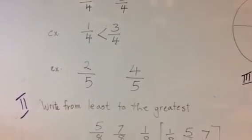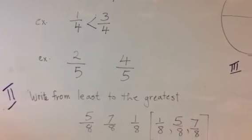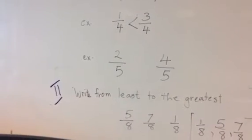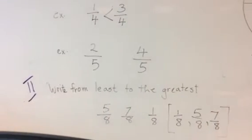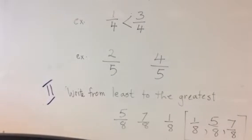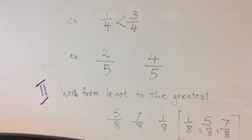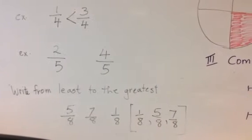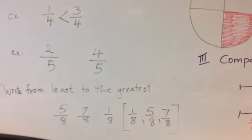They both have the same denominators. So, four fifths would be bigger or greater. Now, if you have to write from least to the greatest, five eighths, seven eighths, or one eighth. They all have the same denominators. So, we will start with the smallest numerator. One eighth is smaller. Then comes five eighths. And then comes seven eighths.